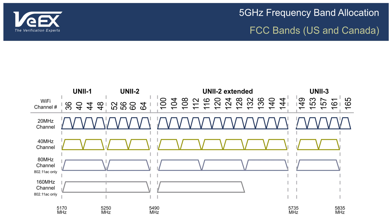Since it's very hard to remember channel frequencies, we use channel numbers instead. The first channel is 36, ranging from 5.170 to 5.190 GHz, centered at 5.180 GHz. Center channel frequencies range from 5.180 GHz to 5.825 GHz. The 5 GHz band is further divided into UNII 1, 2, 2 extended, and 3 bands.